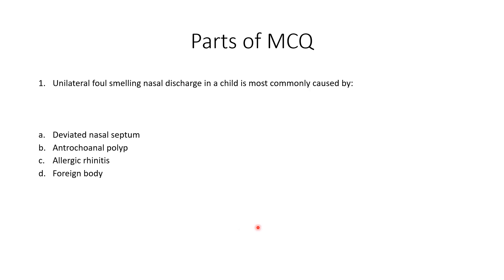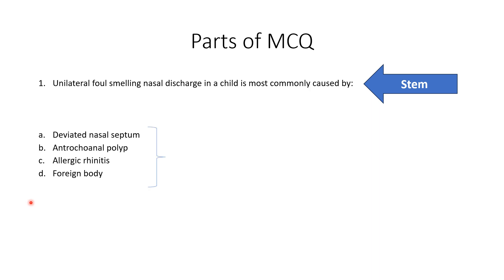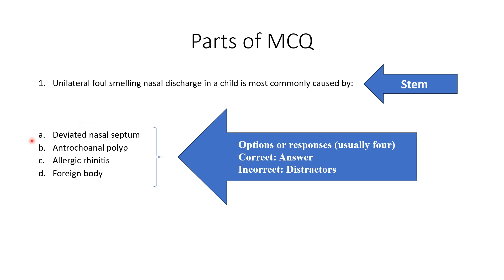The parts of an MCQ: the question or the first line of the MCQ is called the stem. For example, 'unilateral foul smelling nasal discharge in a child is most commonly caused by' — this is the stem. Then there are four options or responses, though they can be three or five. Out of these four options, the one correct option is called the answer and the rest of the three incorrect ones are called distractors.